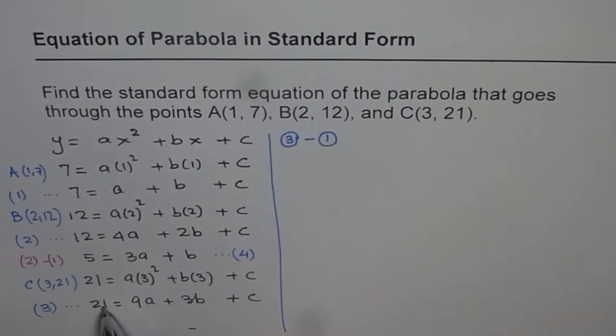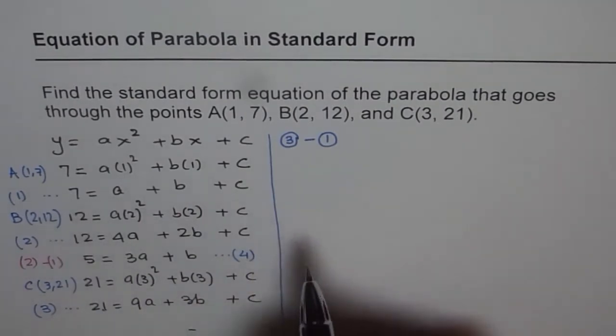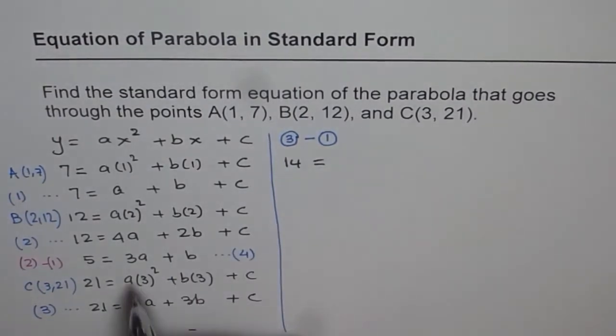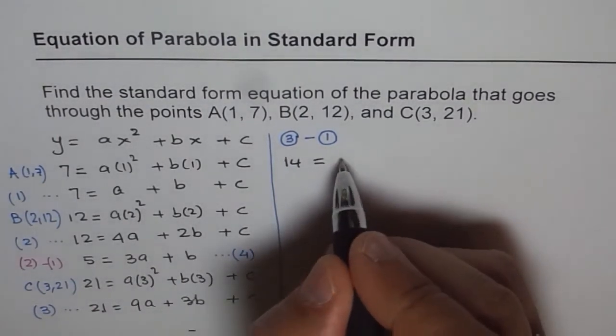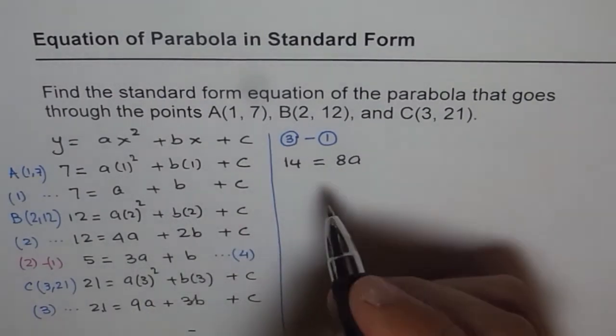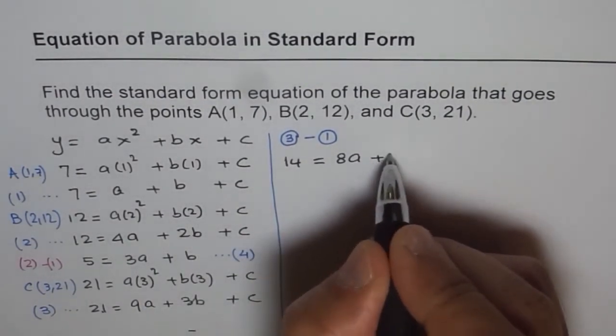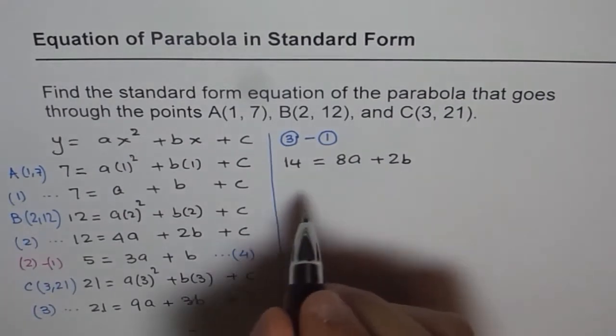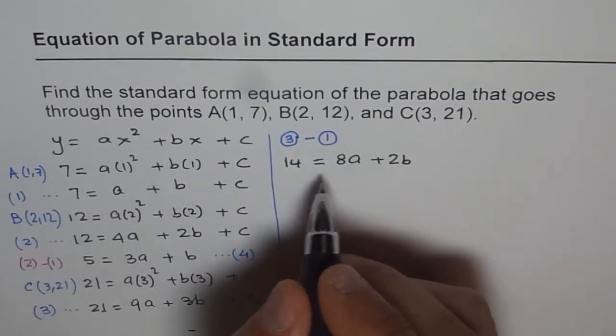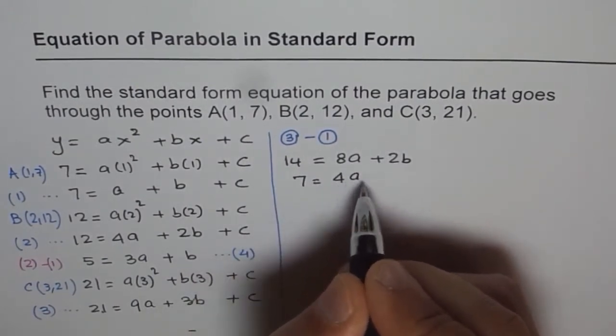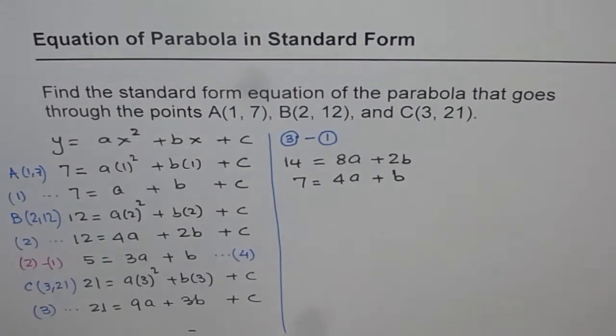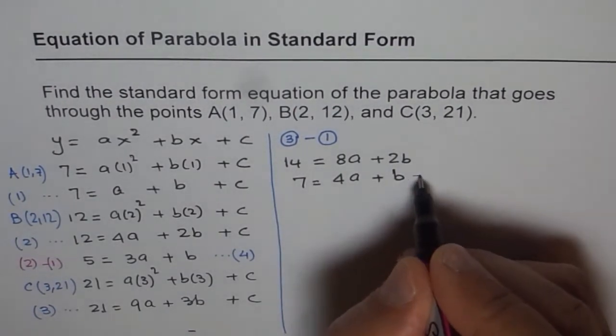So 21 minus 7 is 14 equals 9 minus 1 is 8a, and 3 minus b is 2b. Now this can be simplified. We can divide by 2 to get 7 equals 4a plus b. Now let me call this as equation number 5 for us.